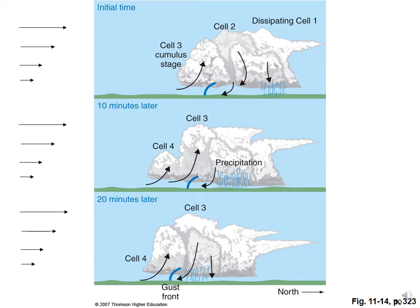Taking this further in time to the middle panel, 10 minutes later: the dissipating cell one is pretty much gone, cell two is now in the dissipating phase, cell three is in the mature phase, and there's a new cell four in the cumulus stage. Twenty minutes later, cell three is in the dissipating phase and cell four is in the mature phase. This physical separation of individual cells allows the updrafts and the downdrafts to persist simultaneously, but the overall cloud has to be much bigger than an air mass thunderstorm. All of this is being driven by the wind shear.